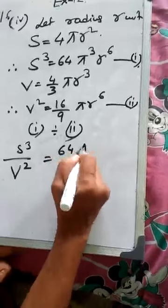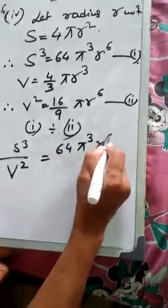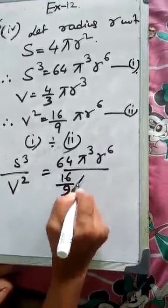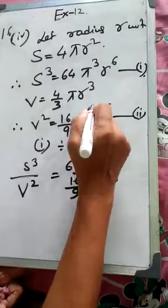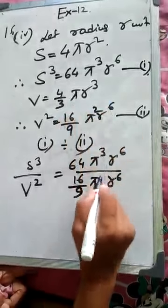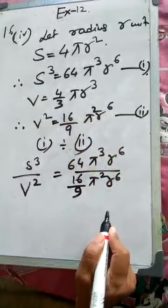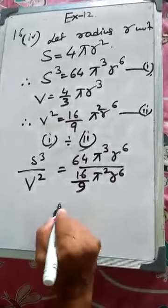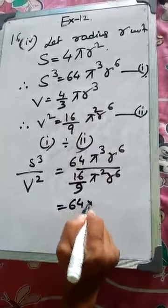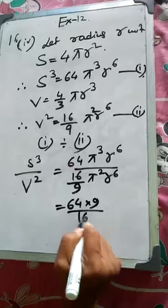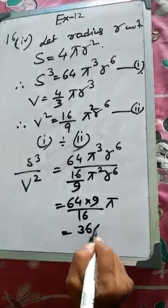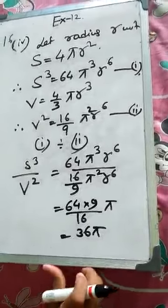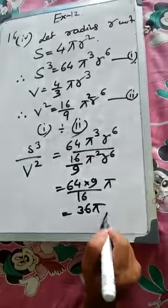Now R to the power 6 is cancelled from both the sides. So 64 into 9 by 16π, it is equal to 36π. No value of π is written here. So answer is 36π.